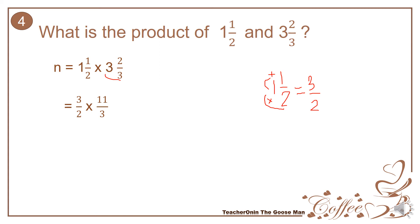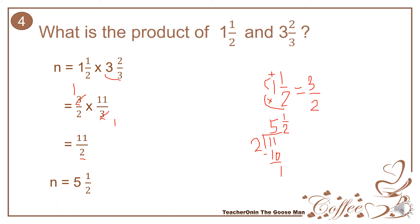So I have 3 over 2 times 11 over 3. Before multiplying, I remove the GCF between 3 and 3, which is 3: 3 divided by 3 is 1 and 3 divided by 3 is 1. So I have 1 times 11 all over 2 times 1, giving me 11 over 2. Converting back to a mixed number: 11 divided by 2 — how many 2's in 11? That's 5, and 5 times 2 is 10. Subtracting 11 minus 10 gives 1, so the answer is 5 and 1 half.